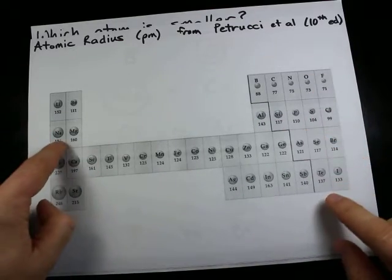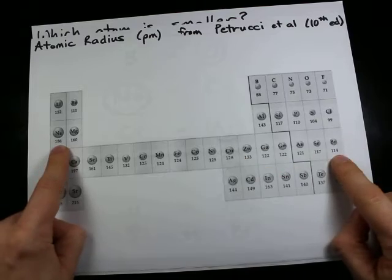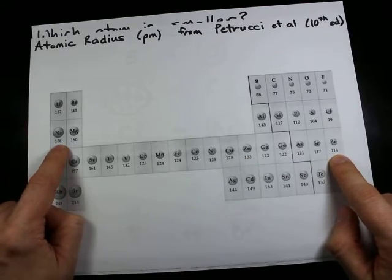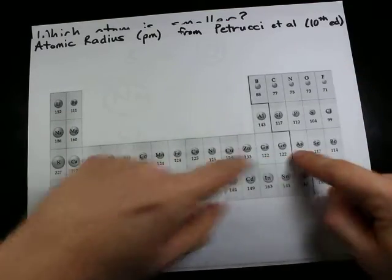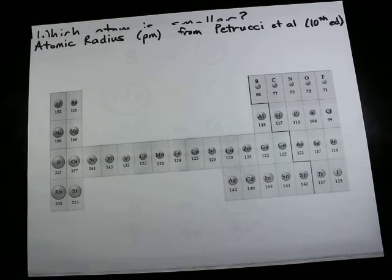There are some atoms in the second row that are bigger than some atoms in the third row. So it's actually a balance between the number of shells and the number of protons in the center.